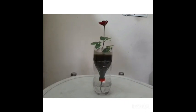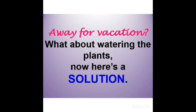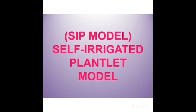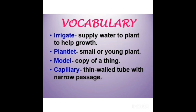See how amazing this process is to keep your plants hydrated even in your absence. It has so many advantages and helps you enjoy your vacation without any worries. The SIP model — Self Irrigated Plantlet Model. Let's add some new vocabulary. First is irrigate — to supply water to a plant to help growth. Second is plantlet — a small or young plant. Next is model — a copy of a thing, for example a model of the solar system. And the last is capillary — a thin-walled tube with a narrow passage.